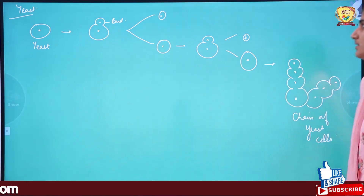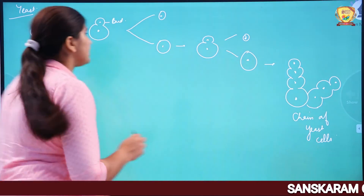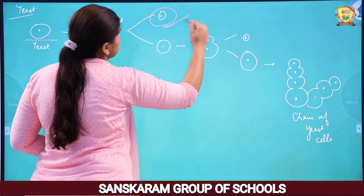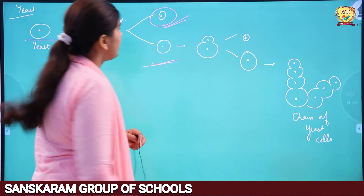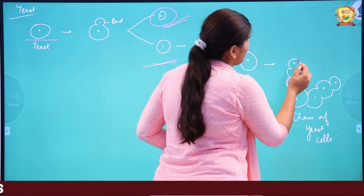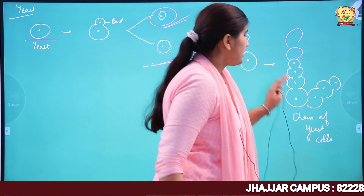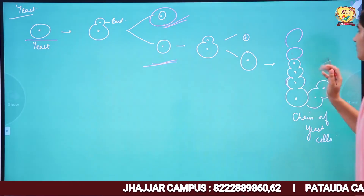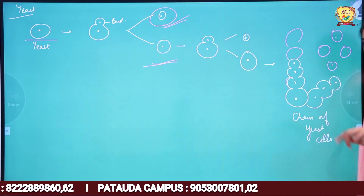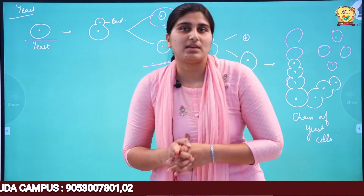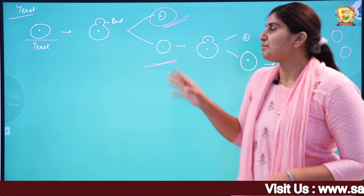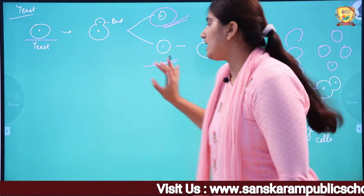Another example is Yeast — Saccharomyces cerevisiae is the scientific name of yeast. In yeast, suppose there is a single cell. A bud appears on it, the bud divides, and you can get a chain of yeast cells. So buds keep forming and a chain of yeast cells is produced.